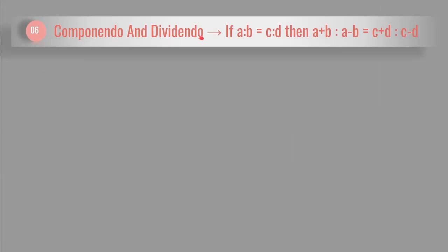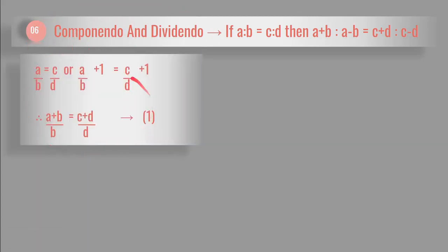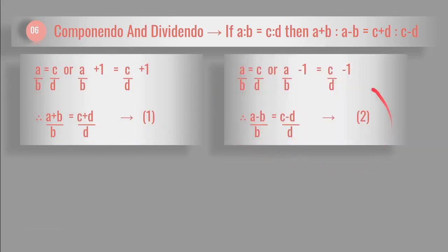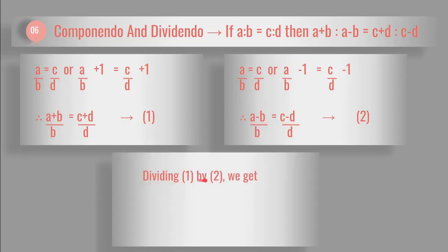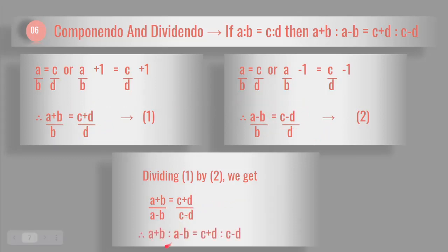Sixth, componendo and dividendo. If A is to B is equal to C is to D, then A plus B is to A minus B is equal to C plus D is to C minus D. As we have seen the componendo and dividendo properties individually, here we understand them together. Equation 1 is from the componendo property and equation 2 is from the dividendo property. Dividing equation 1 by equation 2, we get A plus B over A minus B is equal to C plus D over C minus D. So A plus B is to A minus B is equal to C plus D is to C minus D. This is very useful in most sums.